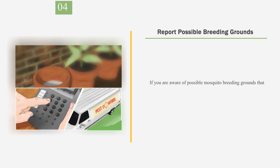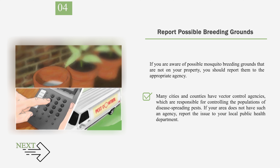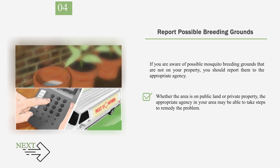Number 4: Report possible breeding grounds. If you are aware of possible mosquito breeding grounds that are not on your property, you should report them to the appropriate agency. Many cities and counties have vector control agencies, which are responsible for controlling the populations of disease-spreading pests. If your area does not have such an agency, report the issue to your local public health department. Whether the area is on public land or private property, the appropriate agency may be able to take steps to remedy the problem.